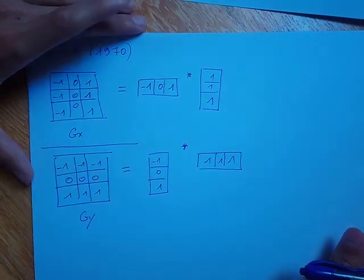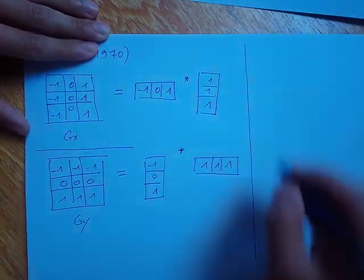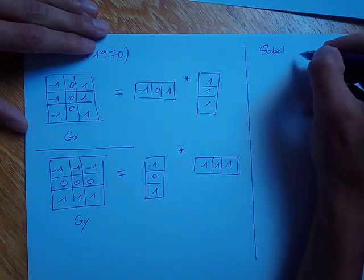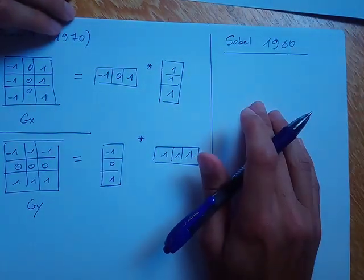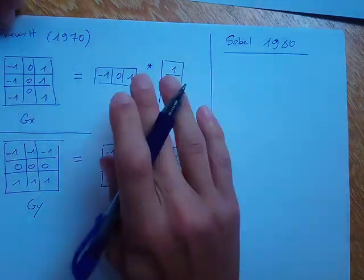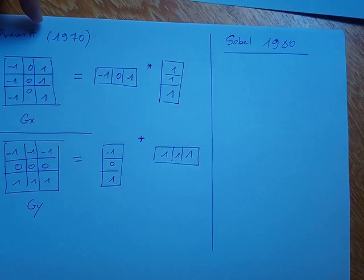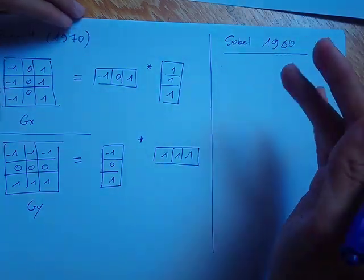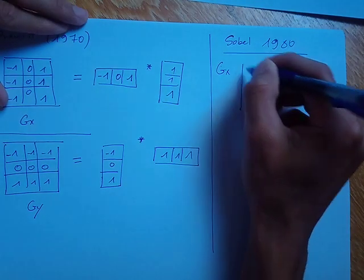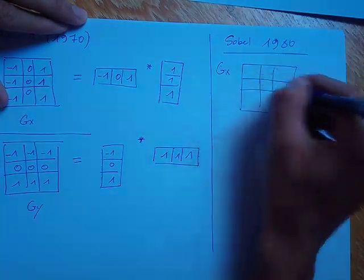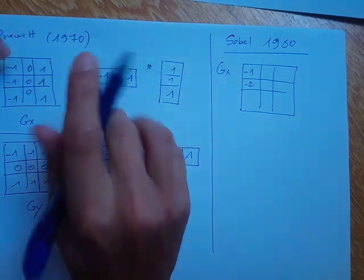Another kernel that is better than Prewitt is the Sobel kernel, proposed around 1980. It is the most widely used kernel in practice. Sobel is based on the same idea as Prewitt — it has a derivative part and a smoothing part — but for the gx kernel it has minus 2 instead of minus 1 in the center row, which is the only difference.